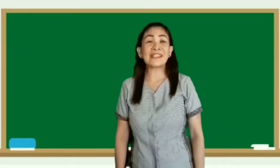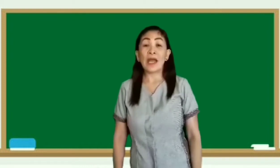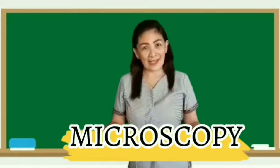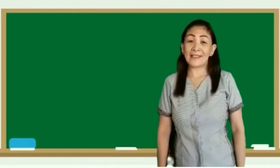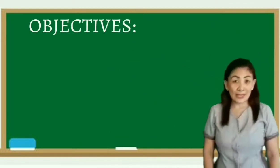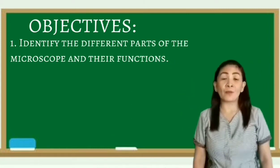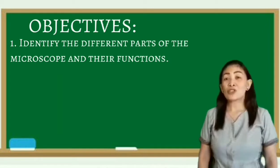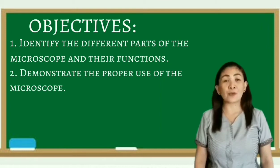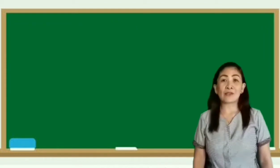The science of investigating very tiny organisms and small objects using the microscope is called microscopy, which is the title of our topic for today. Before anything else, let's have our objectives. Objective number one: identify the different parts of the microscope and their functions. Objective number two: demonstrate the proper use of the microscope. Objective number three: value the importance of the microscope.